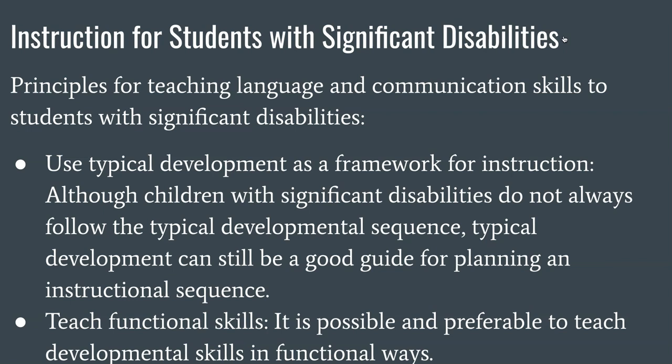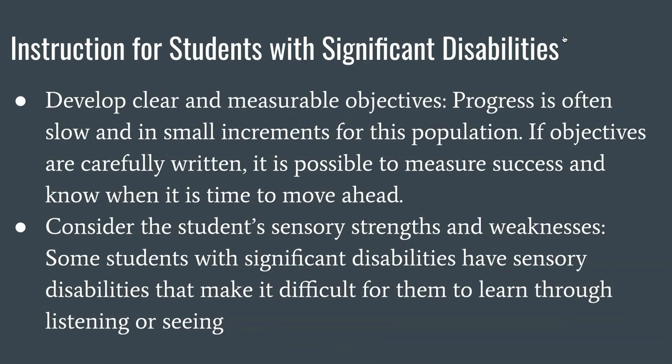Teaching functional skills — it's possible and preferable to teach developmental skills in functional ways. Meaningful, functional skills rather than just drilling on things that aren't important. Develop clear and measurable objectives. Progress is often slow and in small increments for this population. If objectives are carefully written, it's possible to measure success and know when it's time to move ahead.